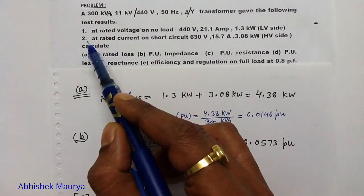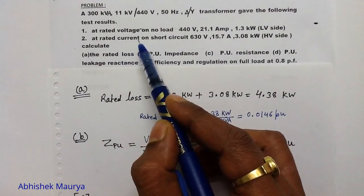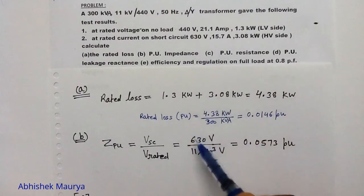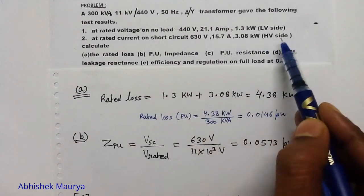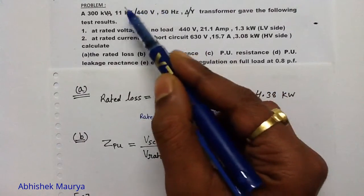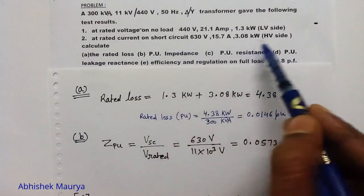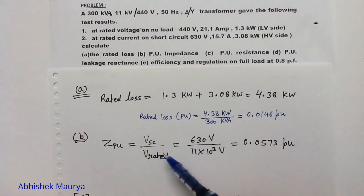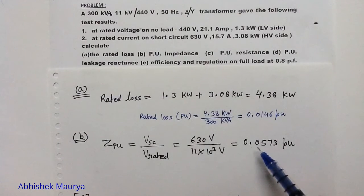Looking at the second test result, the examiner has given that the rated current flows on short circuit when 630V is applied, so this 630V is the value of Vsc. Because this short circuit test is performed on the high voltage side, the rated voltage of the high voltage side, 11kV, is taken. So the per unit impedance equals 630 divided by 11000, giving 0.0573 per unit.